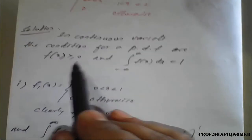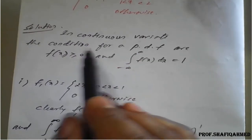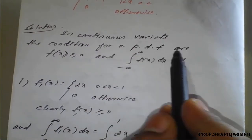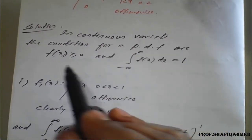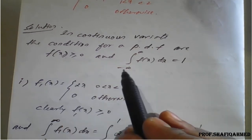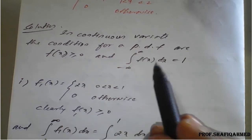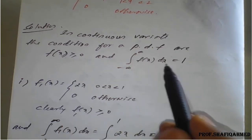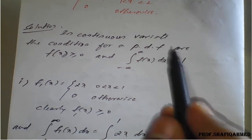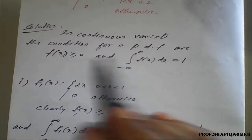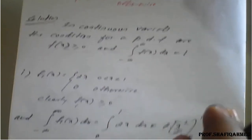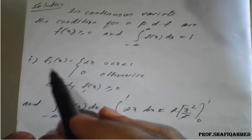The conditions for probability density function are: f(x) ≥ 0, and the integration from minus infinity to plus infinity of f(x) dx should equal 1. If these conditions are satisfied, we can generally say it is a probability density function.